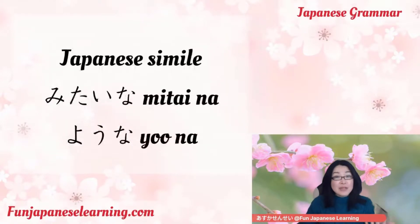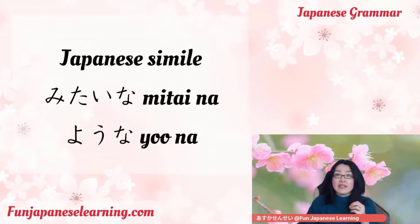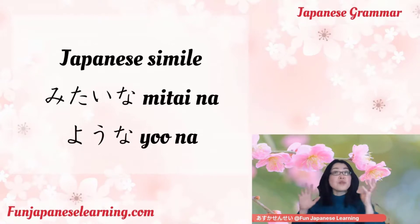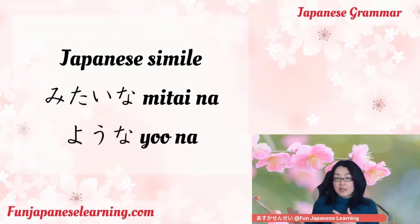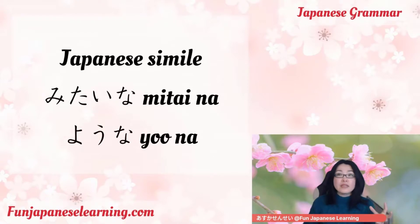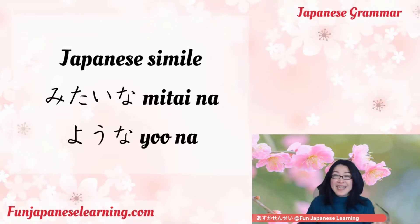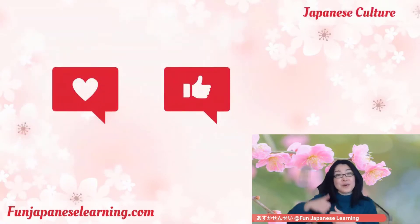So today I talked about Japanese simile, and we use two expressions: mitaina and yona. Be careful about how to use them — mitaina is for conversation, and yona is for written text. Also be careful how to link them. When linking to a noun, you can say watame mitaina directly, but when you use yona, you need the particle no: watame no yona.